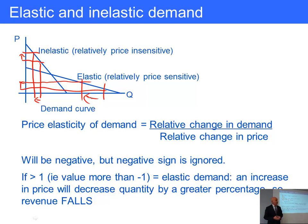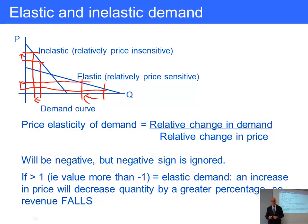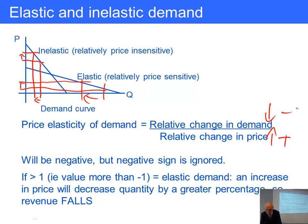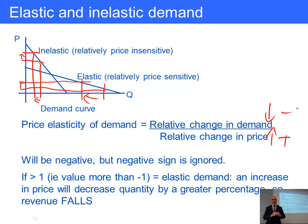This can be calculated. It is calculated as the proportional change in demand divided by the proportional change in price — or equivalently, the percentage change in demand divided by the percentage change in price. If you put the price up, the proportional change in price is positive, but this will cause demand to fall, so the numerator is negative. Strictly speaking, price elasticity of demand is negative, but by convention the negative sign is ignored. So let's look at the three main values that price elasticity of demand can take.